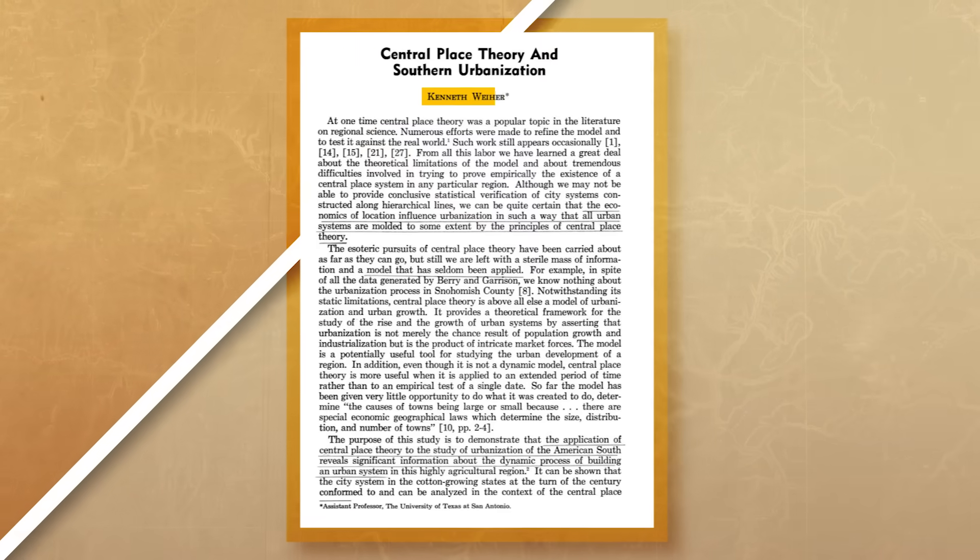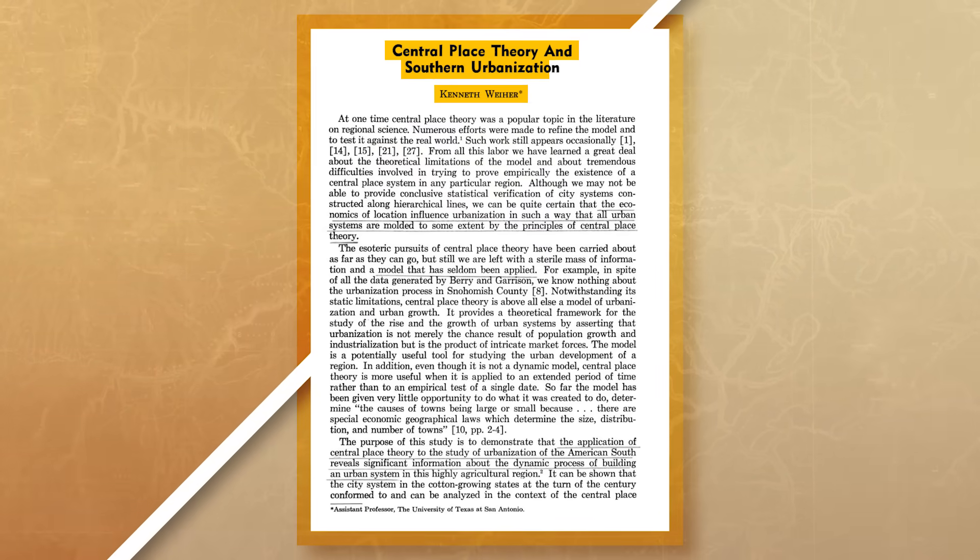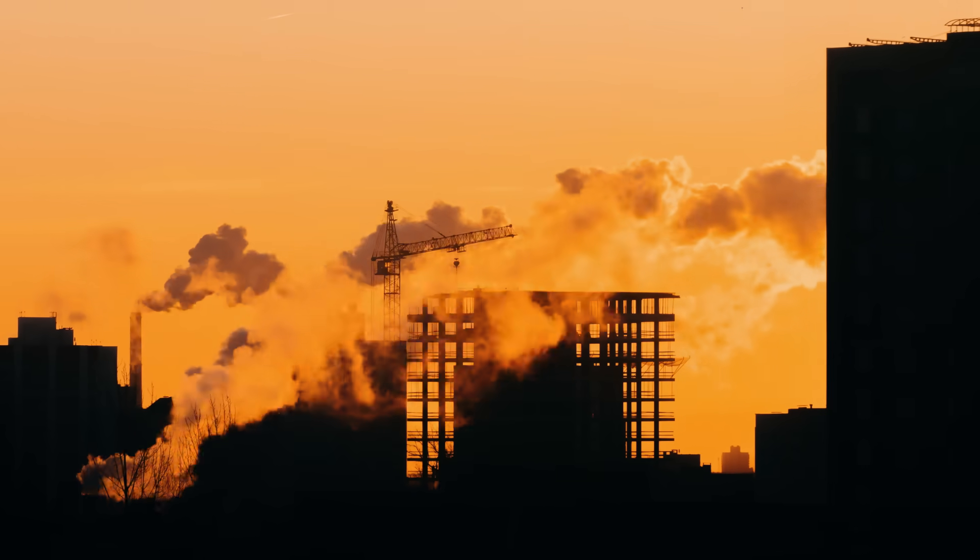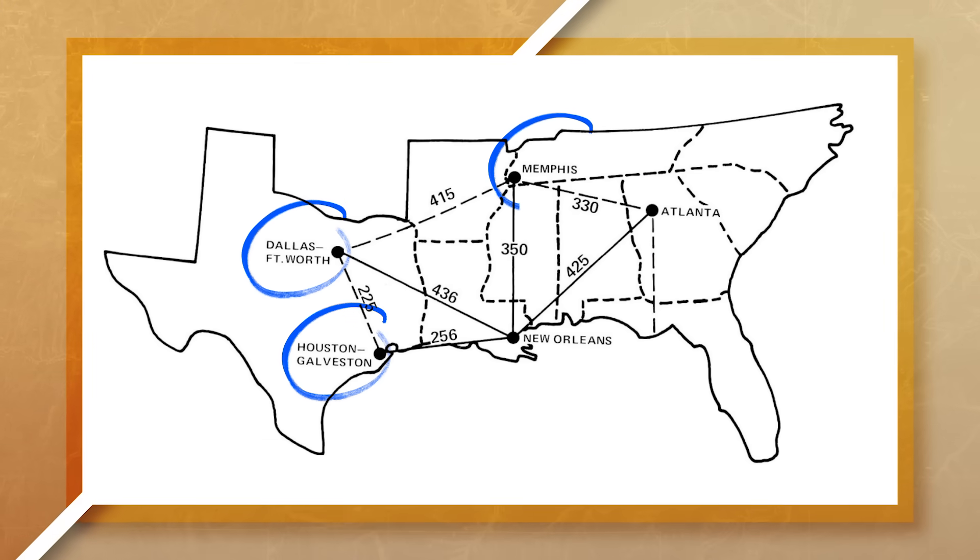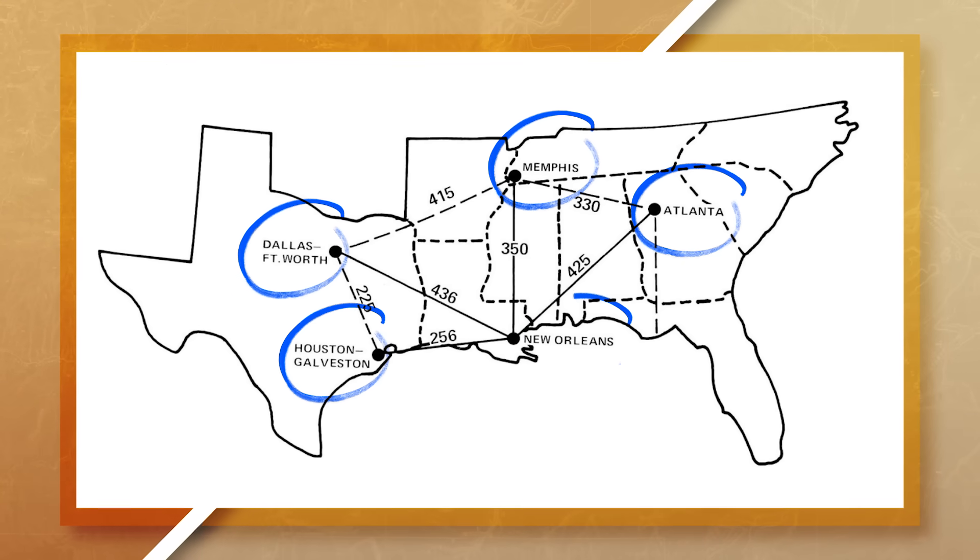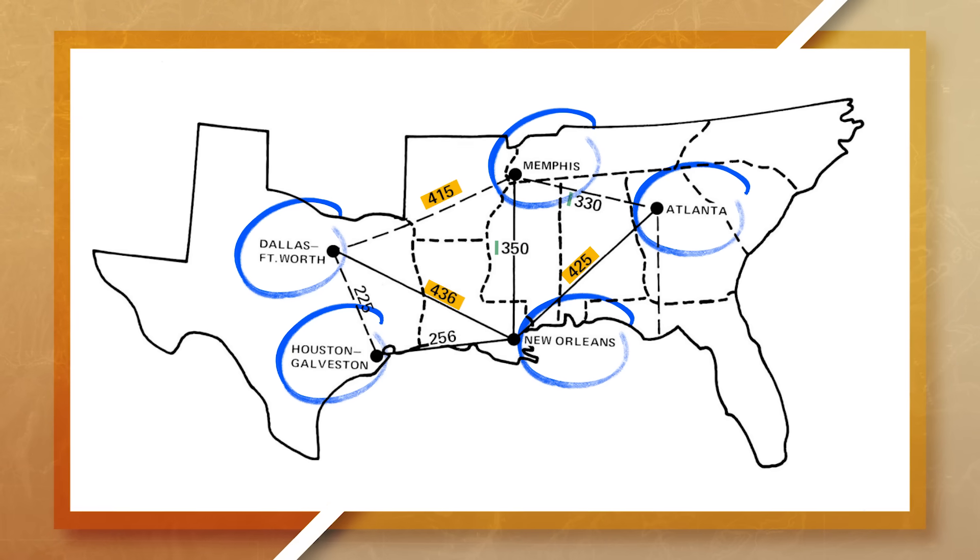We can use the central place theory to better understand urbanization and the spatial layout of different settlements in the American south, which we can see by looking at Kenneth Weyer's study on the central place theory and southern urbanization. The study looked at the south from 1880 to 1930 and found evidence which showed a relationship between small city growth and large city growth which suggested a central place system. His research used the central place theory as a tool to better understand the urban development of the region. When looking at the American south, we can see four clearly dominant urban centers which together with New Orleans served almost the entire south. Notice that these cities are fairly evenly spaced out. If we actually focus on one city, we can see even further connections with the central place theory.